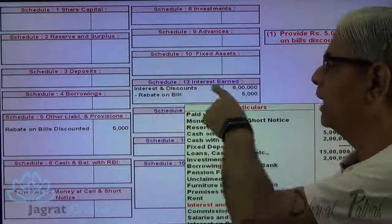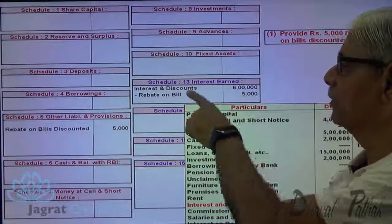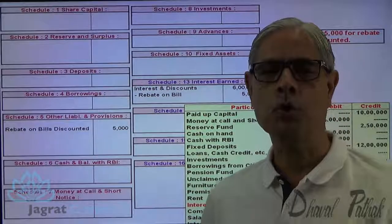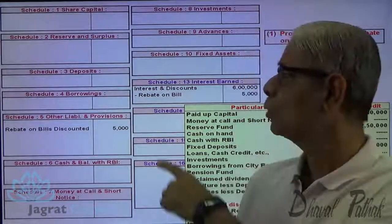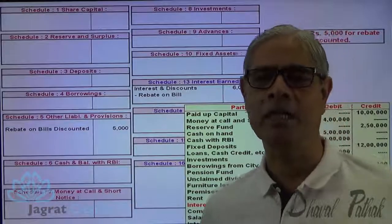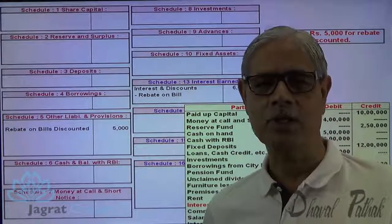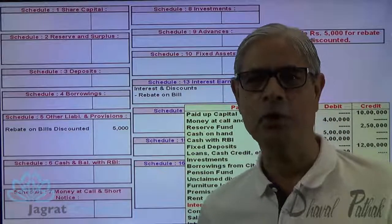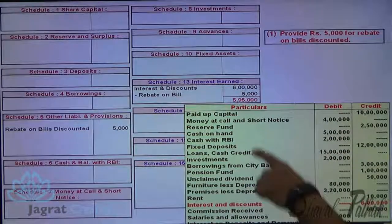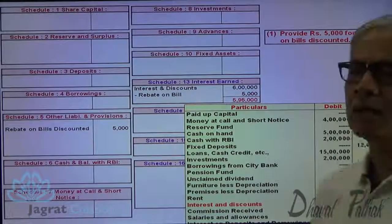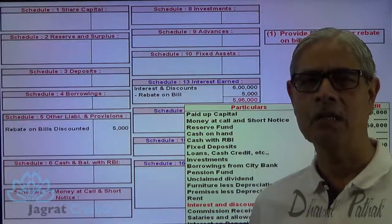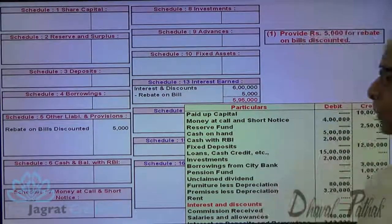Actually in schedule 13 you are required to represent the net amount. You should not disclose the deduction that I have demonstrated, but I am disclosing it for your better understanding. So 5,95,000 is the income of interest earned by the bank.